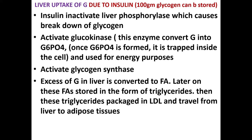Regarding liver uptake of glucose due to insulin action, approximately 100 grams of glycogen can be stored in the liver. The liver has GLUT2 transporters, so glucose can enter the liver very easily. Insulin inactivates liver phosphorylase, the enzyme that causes the breakdown of glycogen. This means once insulin is present, it promotes glycogen formation and storage by inactivating the phosphorylase enzymes that would otherwise break it down.